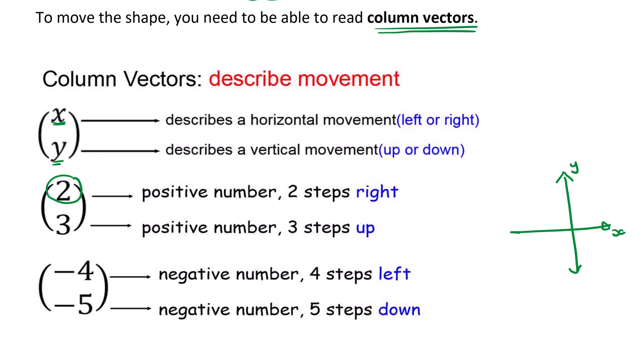If the number is positive, so 2 is an x value and it's positive, it means that I am moving two steps to the right. When the x value is negative, that means I am moving four steps to the left.